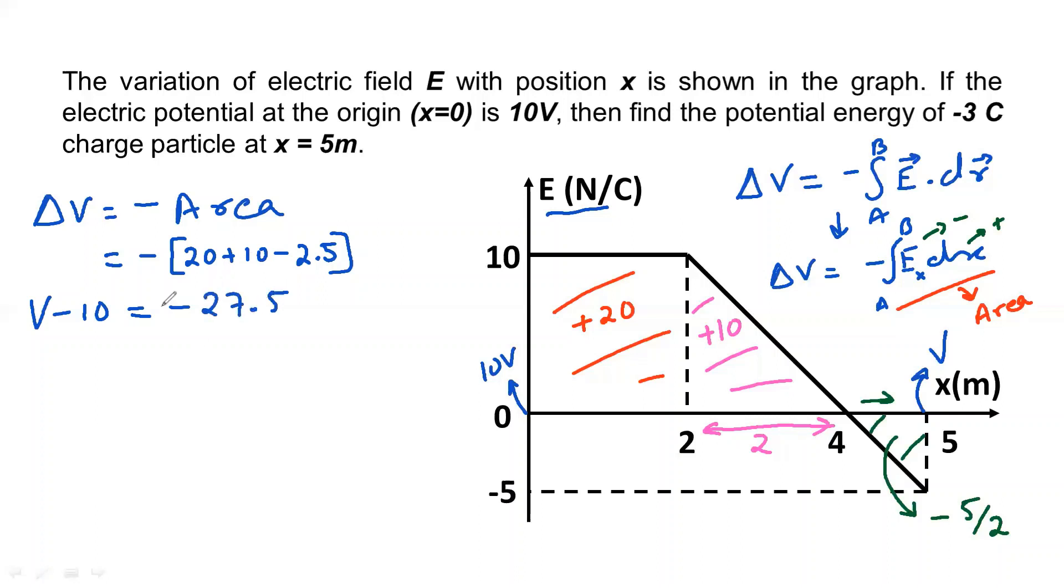...27.5. So from here V is 17.5 volts. The voltage at x equals 5 meters is 17.5 volts. So you're supposed to calculate the potential energy. U is going to be charge into voltage. We know the charge is minus 3 coulombs.